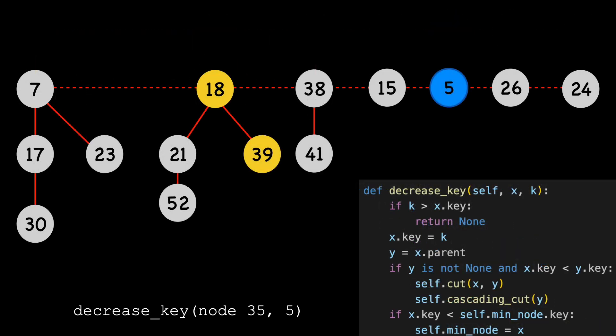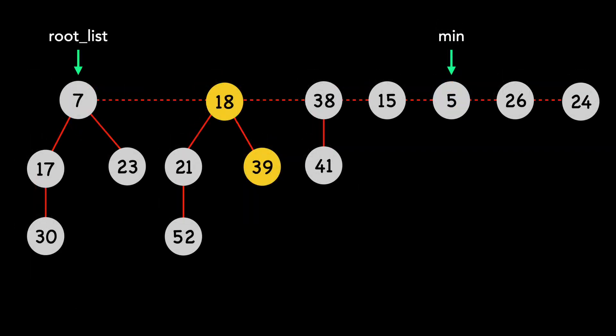Returning to the decrease key function, the final step is to compare X with the min. This time, we do need to update the min pointer. Here is the result of our Fibonacci heap after decreasing two keys.